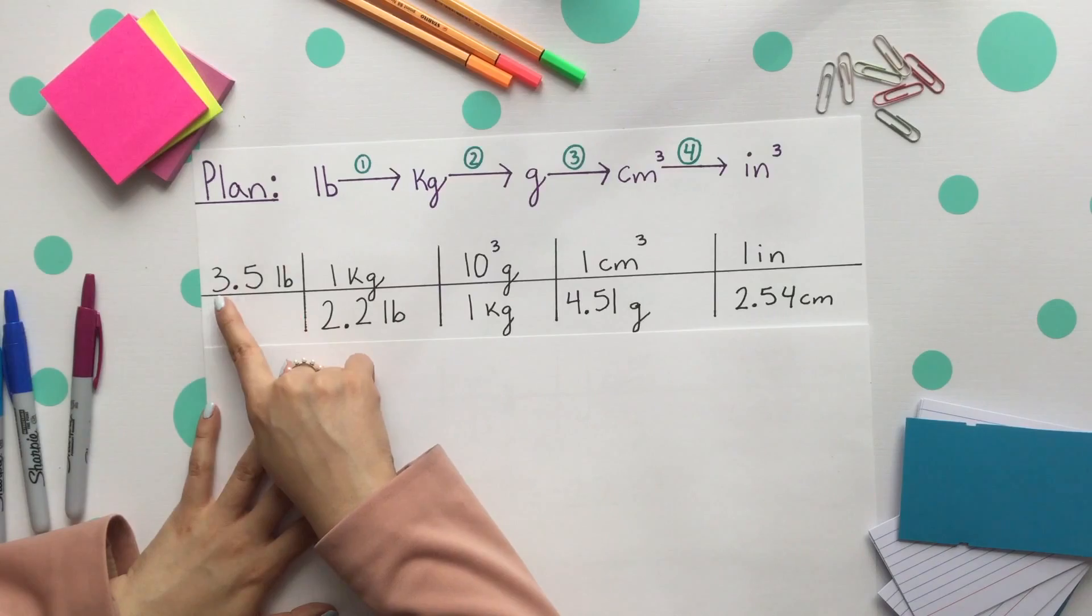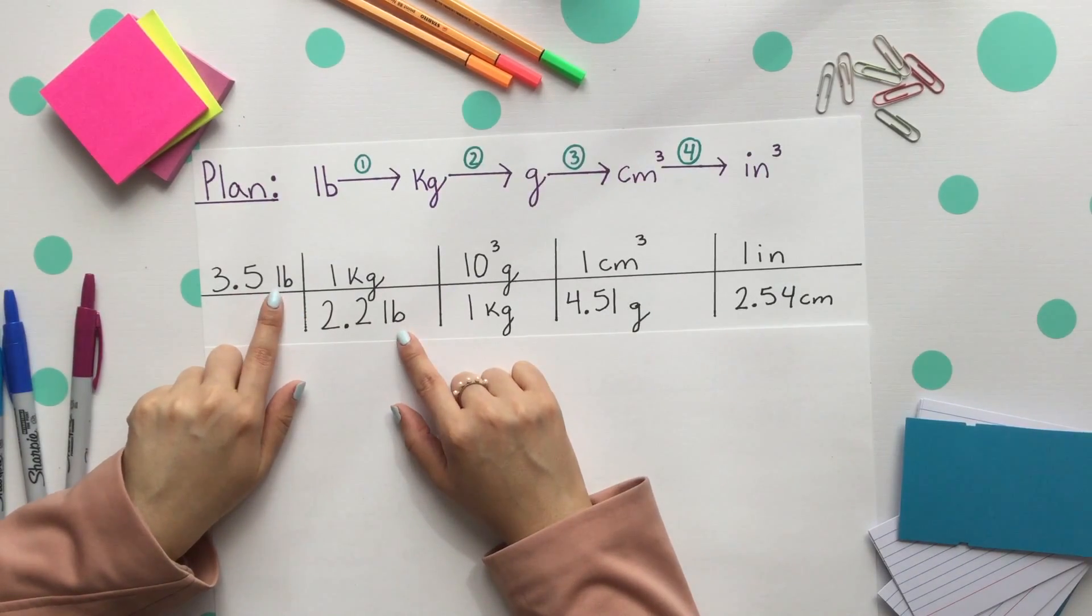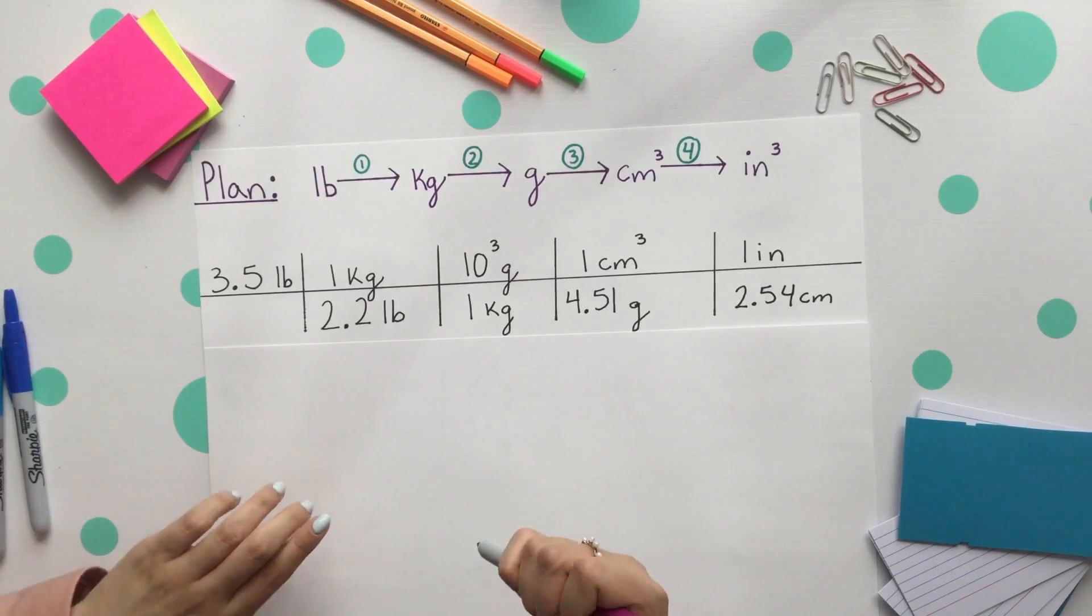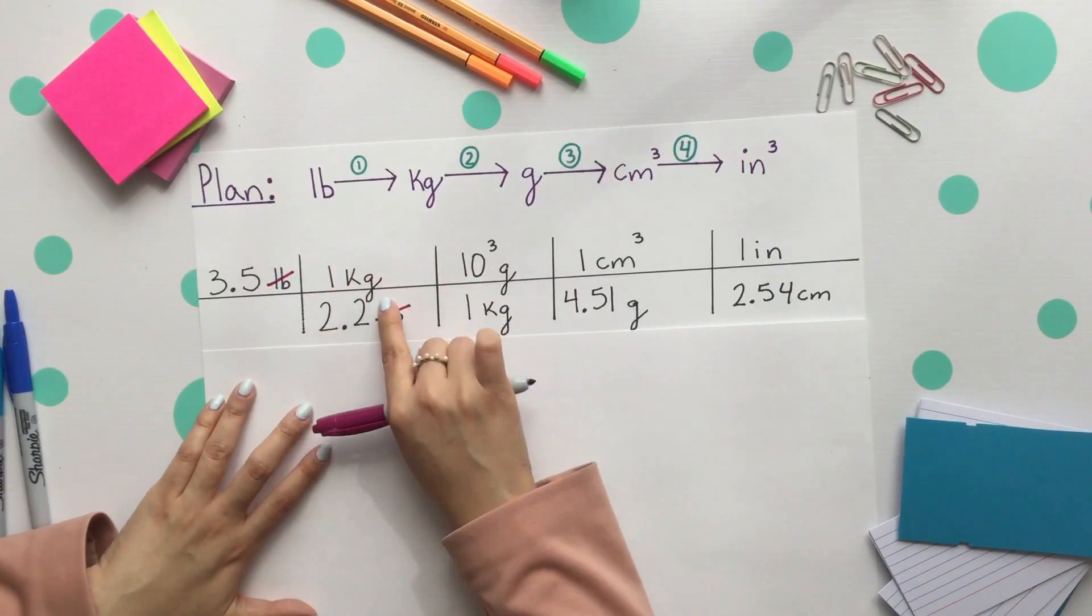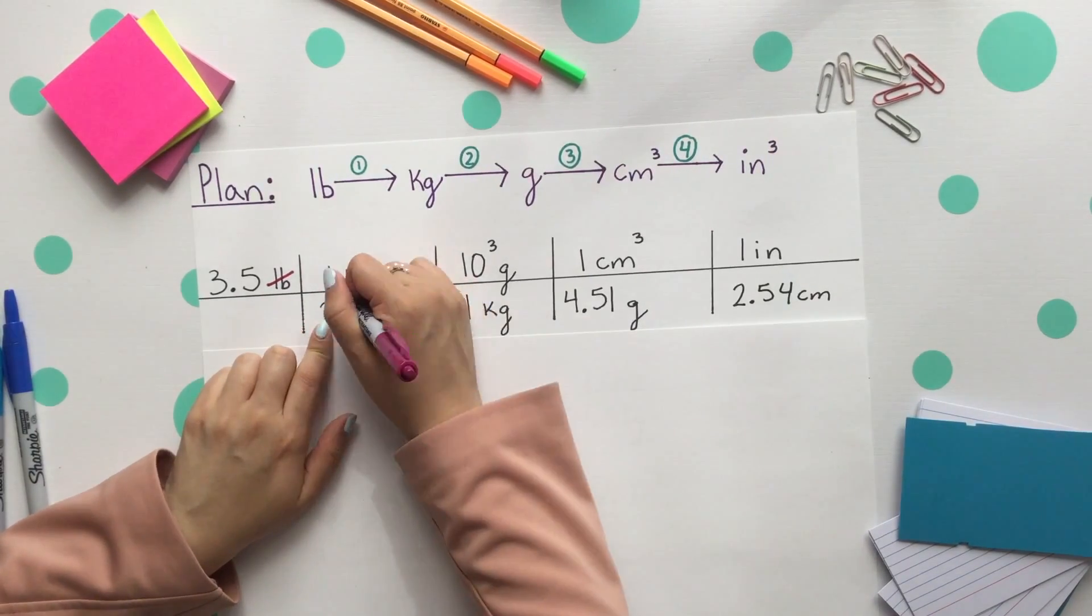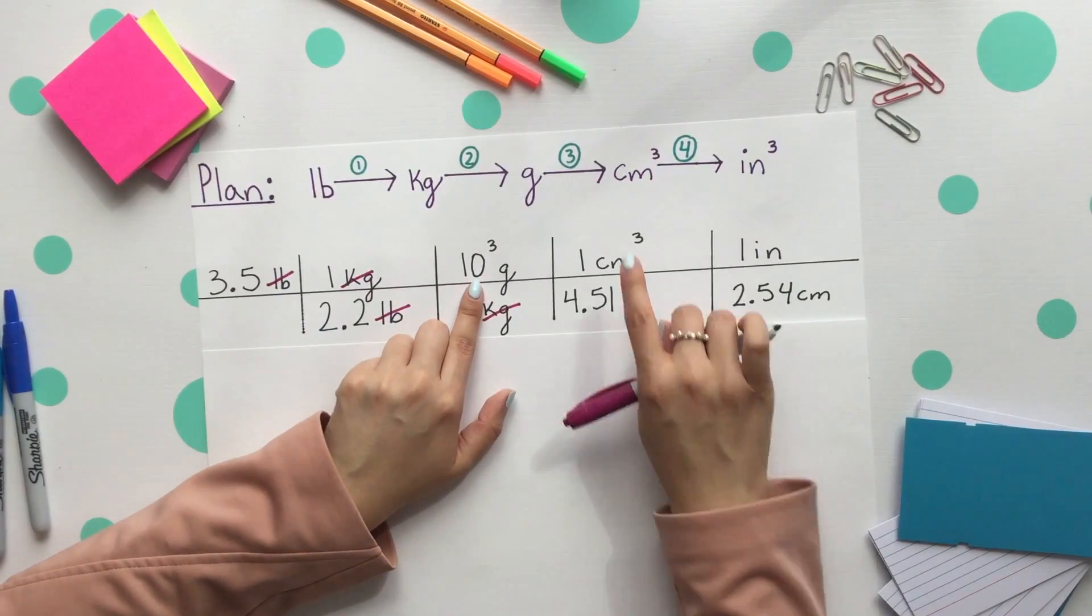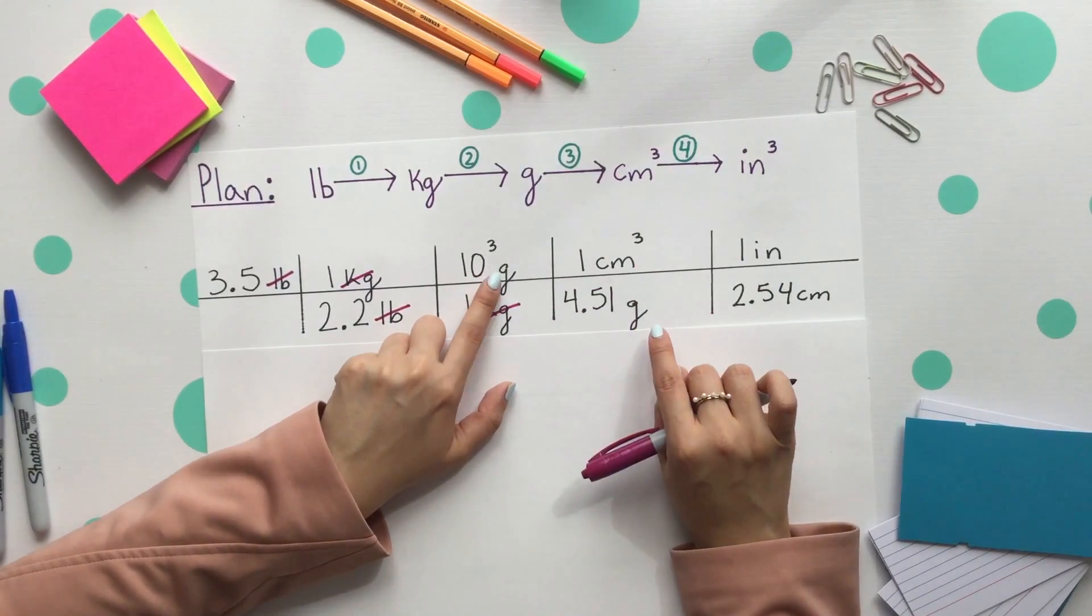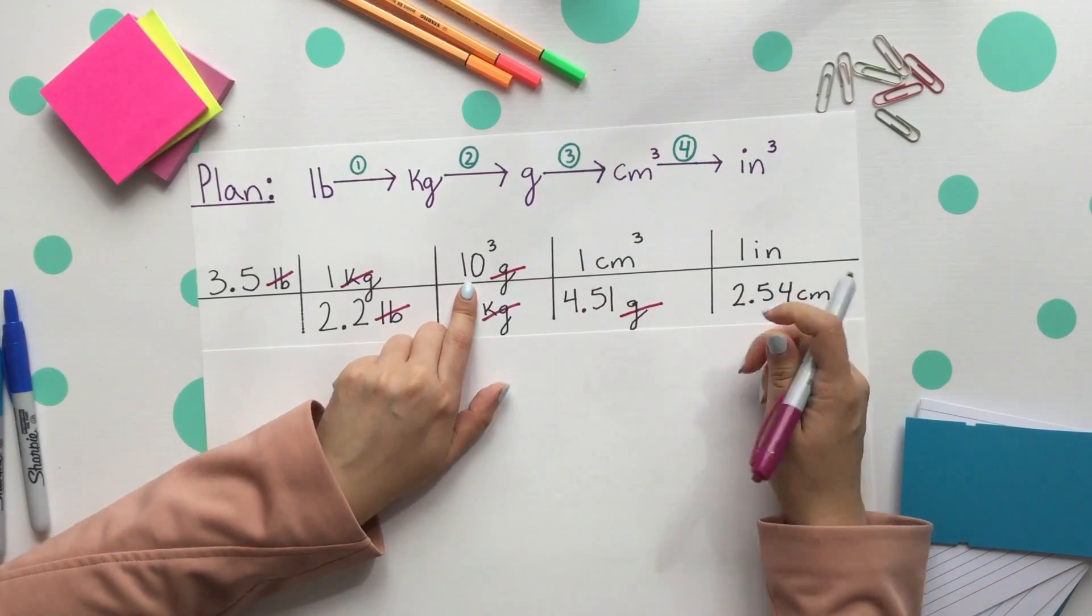Our given is what we start with: 3.5 pounds, aligning those pounds across from each other so they can then cancel. And let's do this together, so our pounds cancel out. On top is our kilograms. Once again, we'll align kilograms across from each other so those kilograms also cancel out. We're now to our third conversion factor, and we'll align the grams across from one another so they can cancel. We see the pattern.